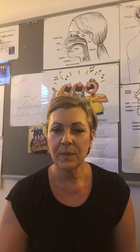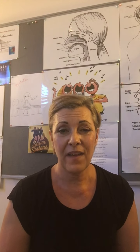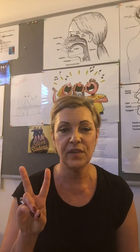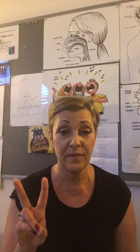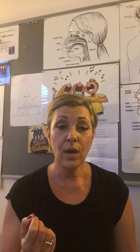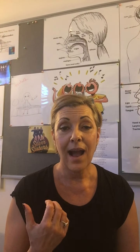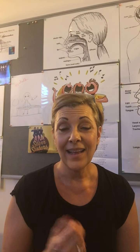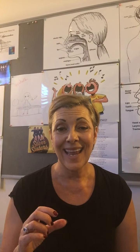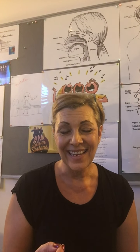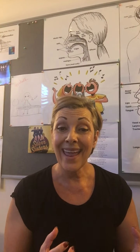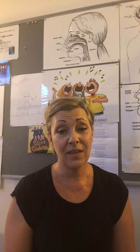The easiest way to explain the E vowel is that it is the first of the two forward vowels. U and O are the back vowels, A and A are the middle vowels, and E and E are the forward vowels.